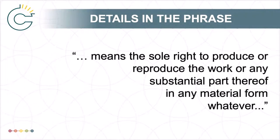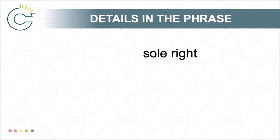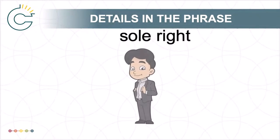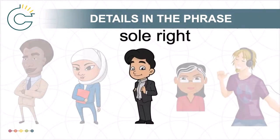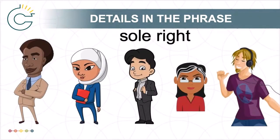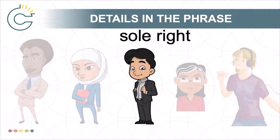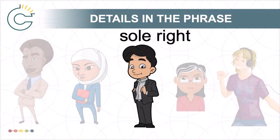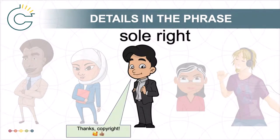The first is the phrase "sole right." Sole right is important because it means the copyright holder doesn't just have the right to reproduce the work — it means that only the copyright holder has that right. While there are exceptions to copyright infringement, copyrights are exclusive, or perhaps more accurately, exclusionary rights.